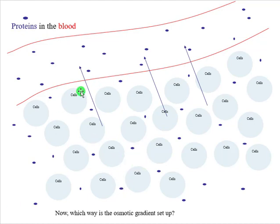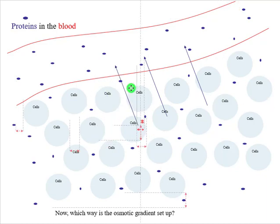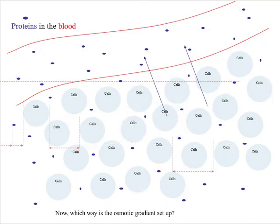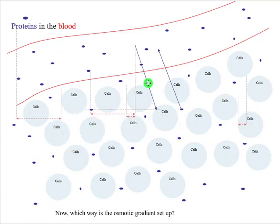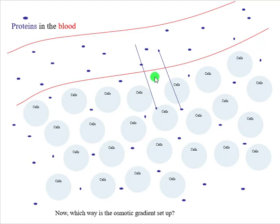Now consider when the solute concentration of the interstitium and the capillaries is the same. There is no osmotic gradient — water is stagnant and neither motivated to move into the blood nor out of it. Water moves from areas of low solute to high solute concentration, but if both sides are equal, water does not want to go anywhere.